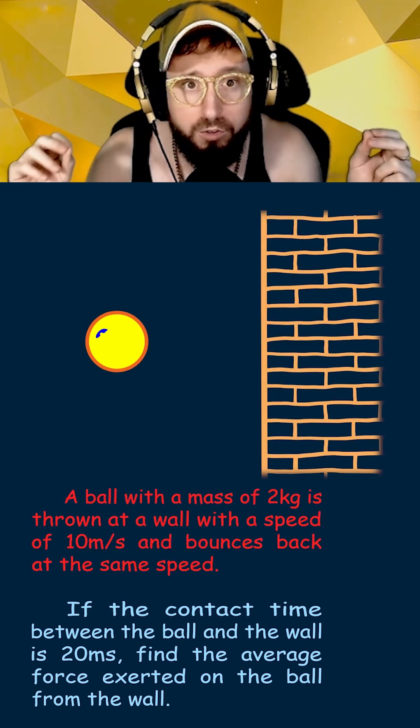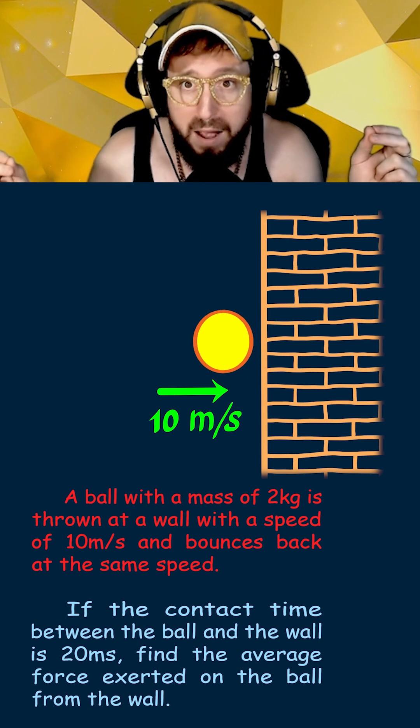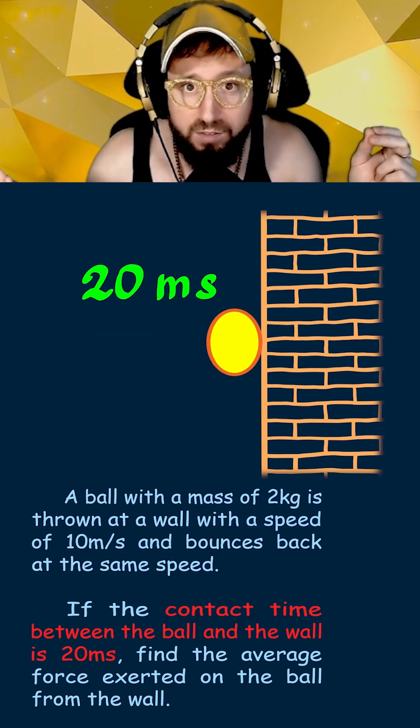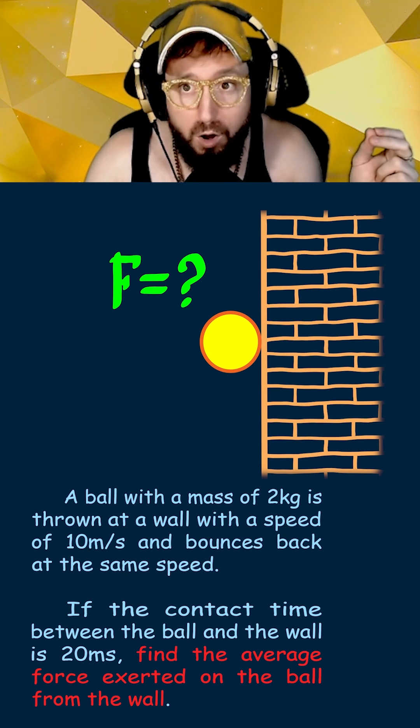A 2kg ball is thrown at a wall with a speed of 10 meters per second and bounces back at the same speed after being in contact with the wall for 20 milliseconds. Find the average force exerted on the ball from the wall.